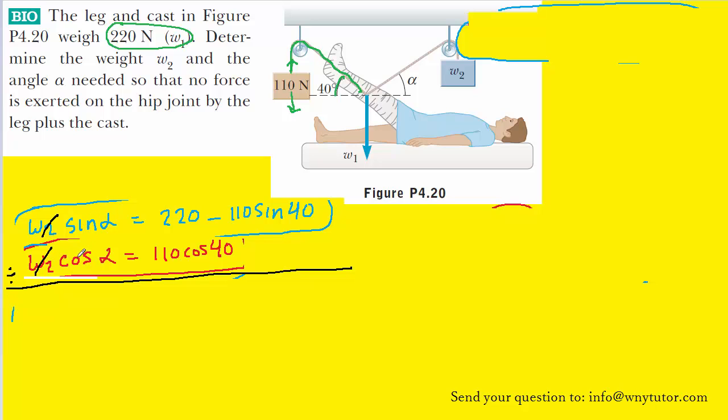Sine of alpha divided by cosine of alpha actually gives us tangent of alpha. That's just a trigonometric identity. That sine of any angle divided by the cosine of the same angle can be simplified to just the tangent of that angle.